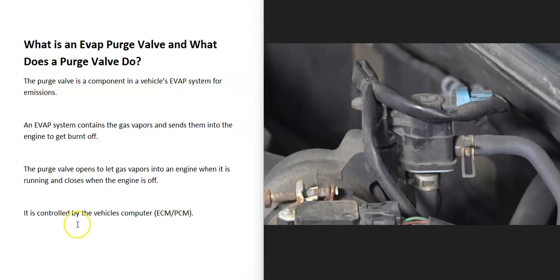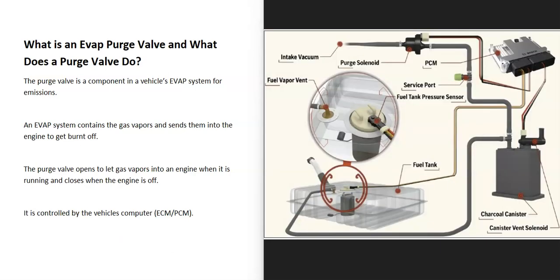Today I'm talking about what a purge valve is and what it does inside of the EVAP system. First of all, what is the EVAP system? The EVAP system takes all the gas vapors from the gas tank and feeds them back into the engine to get burnt off so that they don't escape into the atmosphere. This is for emissions.